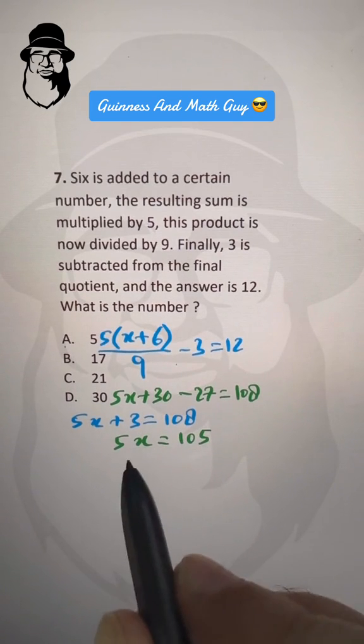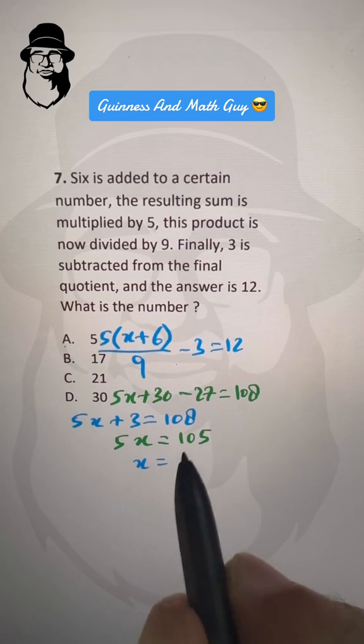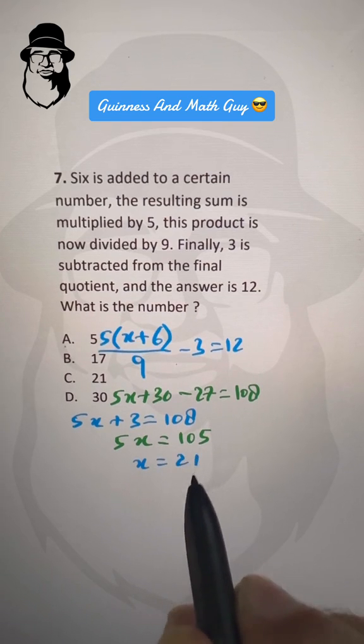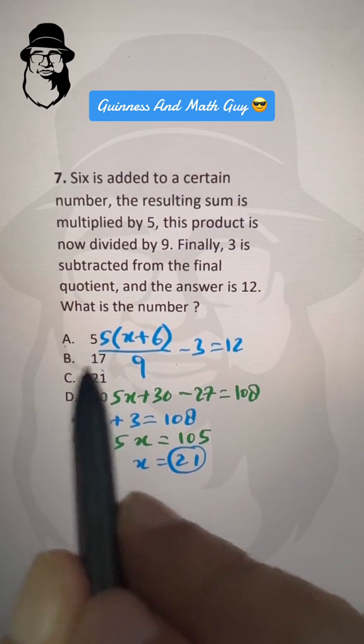Now divide both sides by 5 to get x is equal to... 5 times 2 is 10, 5 times 1 is 5. So 21 is our answer, choice C.